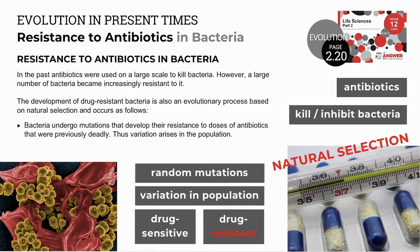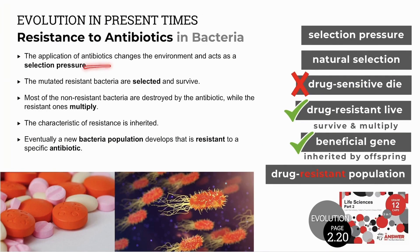The second example of evolution in present times is resistance to antibiotics in bacteria. Antibiotics kill bacteria or inhibit their growth, and they were often over-prescribed for any infection, not just bacterial infections. Random mutations made more and more bacteria increasingly resistant to specific antibiotics, and drug-resistant bacteria are now unaffected by previously deadly drugs. This development can be explained by natural selection: random mutations cause variation, with some bacteria drug-sensitive and some drug-resistant. The application of antibiotics changes the environment and acts as a selection pressure, causing drug-sensitive individuals to die out while adapted drug-resistant individuals survive and multiply.